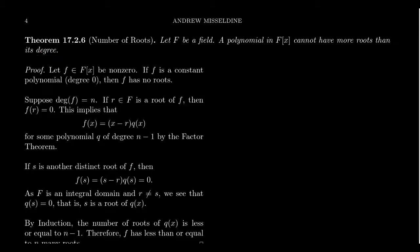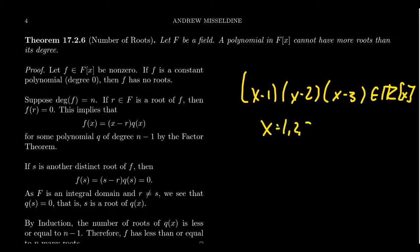If you take a polynomial whose coefficients come from some field F, then the number of roots of that polynomial is no more than the degree of the polynomial. If you have something like (x-1)(x-2)(x-3) over the real numbers, clearly we can see that x equals 1, 2, and 3 are roots of the polynomial. This is a degree 3 polynomial, and this theorem is telling us that all of the roots are now accommodated. There's only three roots.